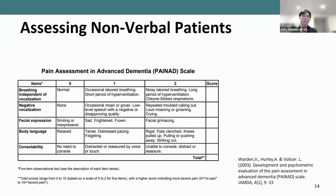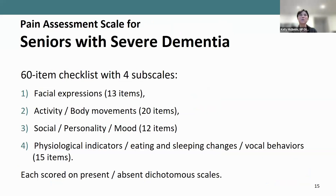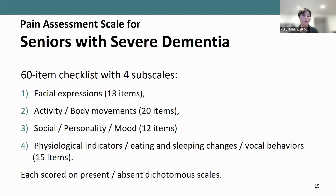Another tool is the Pain Assessment Scale for Seniors with Severe Dementia — a 60-item checklist with four subscales. This isn't something you'd do on an individual basis, but something a retirement home could look into if they wanted a pain champion or a strong approach to pain management in patients with severe dementia. It looks at facial expressions, activity and body movements, social personality and mood, as well as physiological indicators including sleeping and eating.